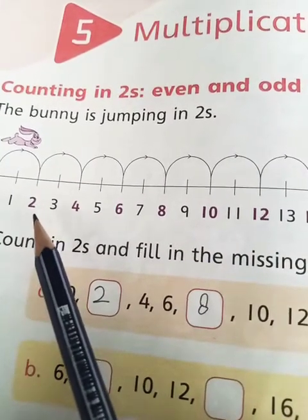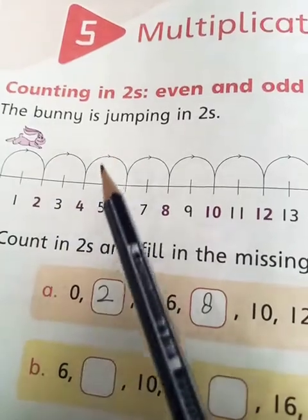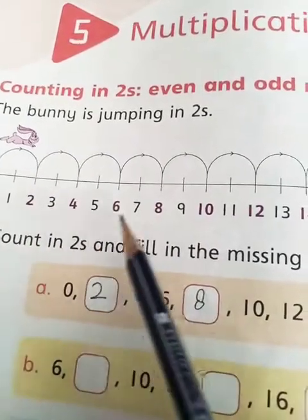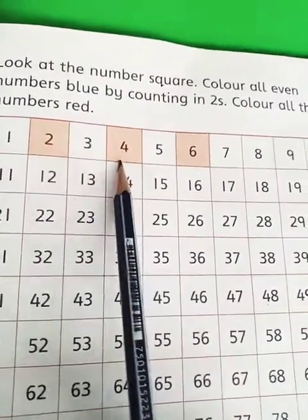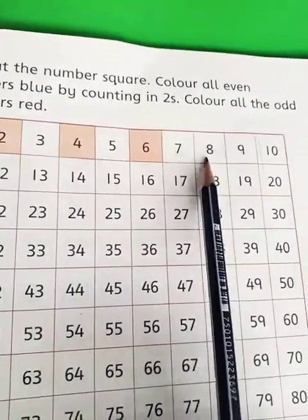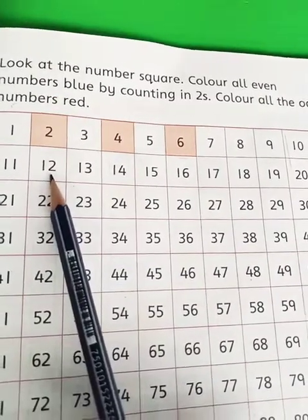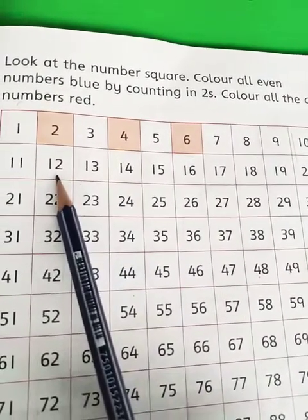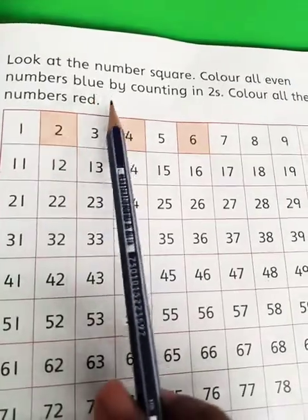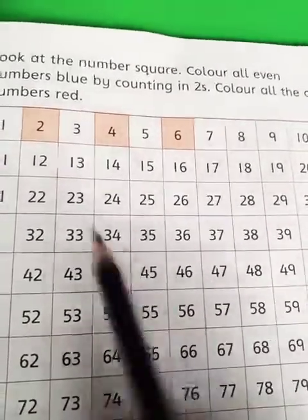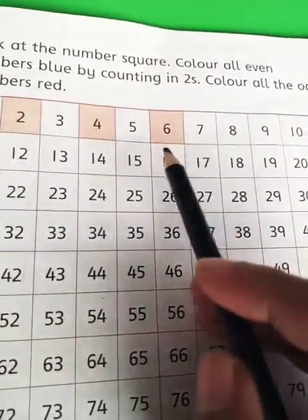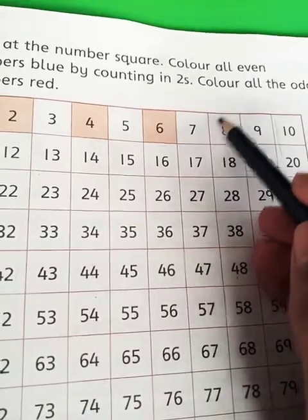The numbers which start from 2 and the jumping in 2s, all these numbers are called even numbers. For example 2, 4, 6, 8, 10, 12 and so on. These are even numbers and we have to color these even numbers with blue color. So 2, 4, 6, and after 6 we will color 8 with blue color.